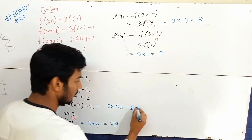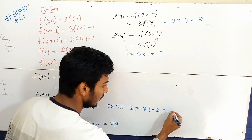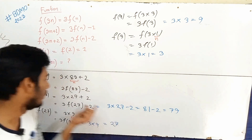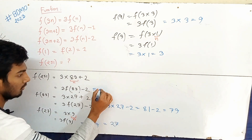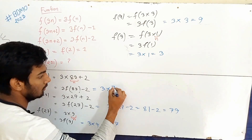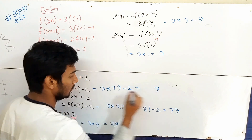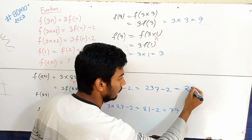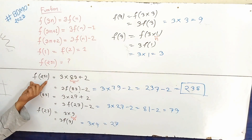Continuing: f(83) = 3f(27) - 2 = 3(27) - 2 = 81 - 2 = 79. So f(83) = 79. Therefore, f(251) = 3f(83) - 2 = 3(79) - 2 = 237 - 2 = 235.